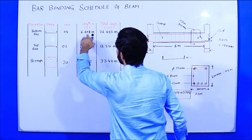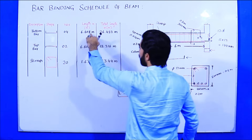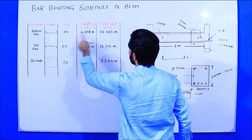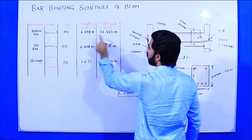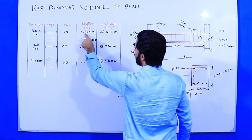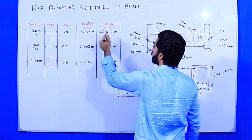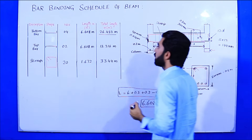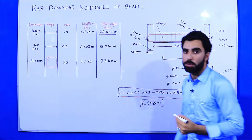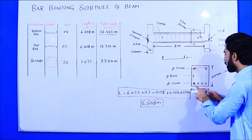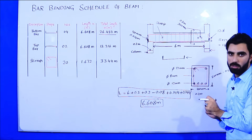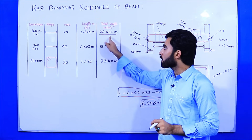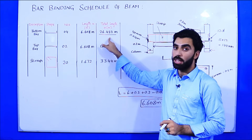The length of one bottom bar is 6.608 meters and we have four numbers. So the total length is 4 × 6.608 = 26.432 meters. This is the total length of bottom bars for this simply supported beam.